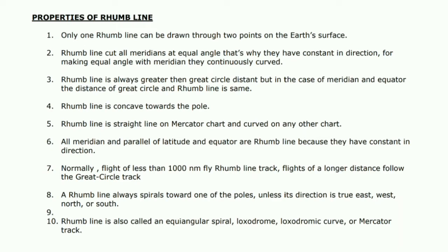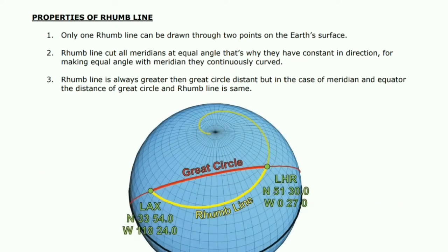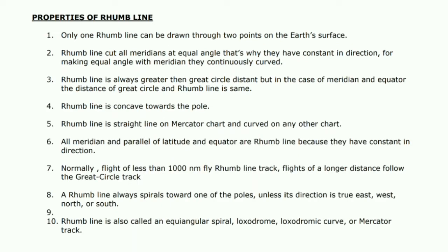However, in the case of meridians and the equator, the distance of the great circle and the rhumb line are the same. In the diagram you can see the great circle is shorter than the rhumb line because the rhumb line has to curve continuously to maintain the same angle, while the great circle continuously changes heading according to the meridian — that's why the great circle is shorter than the rhumb line distance. Mostly, commercial aircraft follow the great circle track because it is a shorter distance.